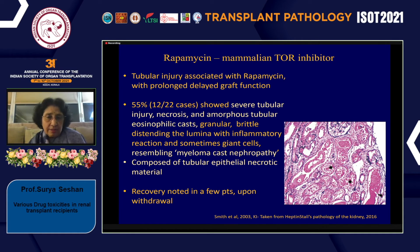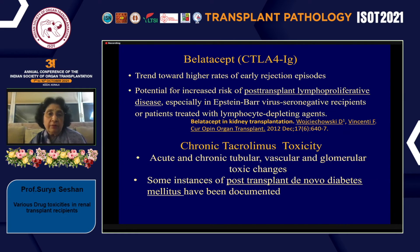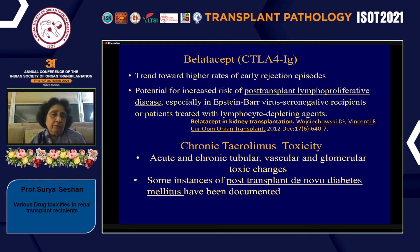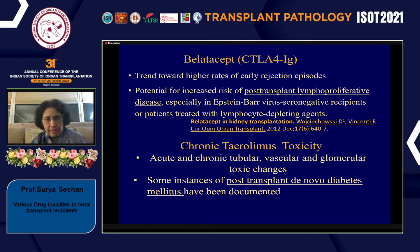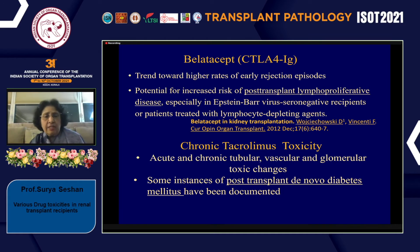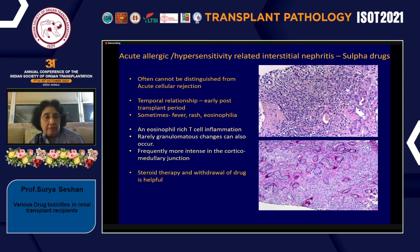Belatacept, a CTLA-4 antibody acting on the antigen-presenting cell, has a side effect of a trend toward high rates of early rejection and increased risk of post-transplant lymphoproliferative disorders. In addition to chronic tacrolimus toxicity involving tubular, interstitial, vascular, and glomerular changes, some instances have shown post-transplant de novo diabetes mellitus resulting from suppression of islets in the pancreas.